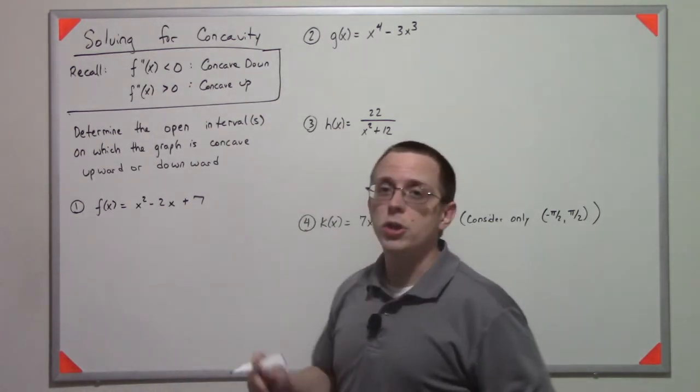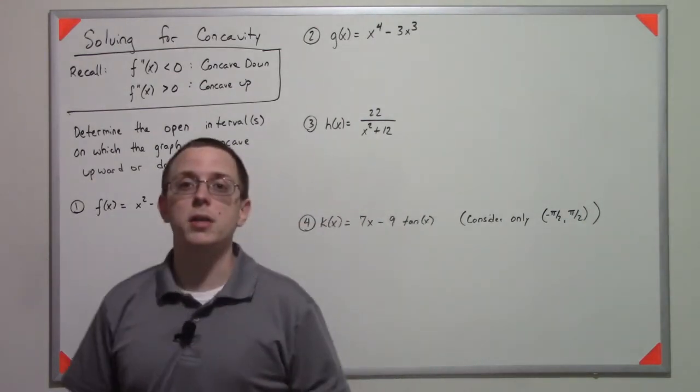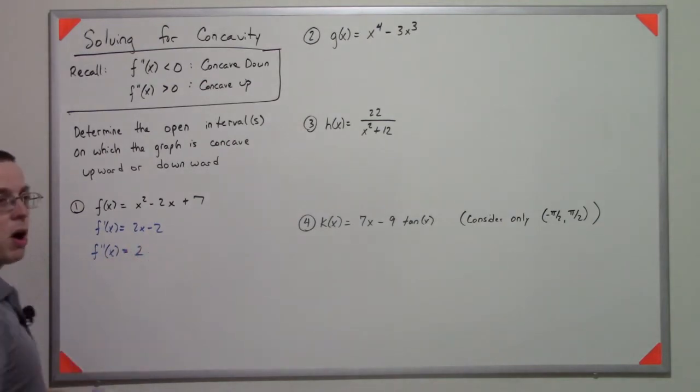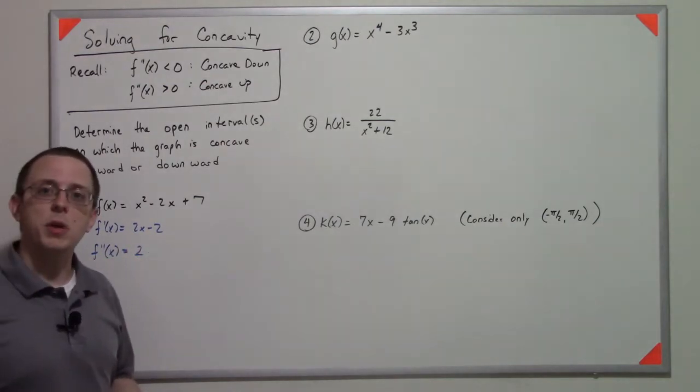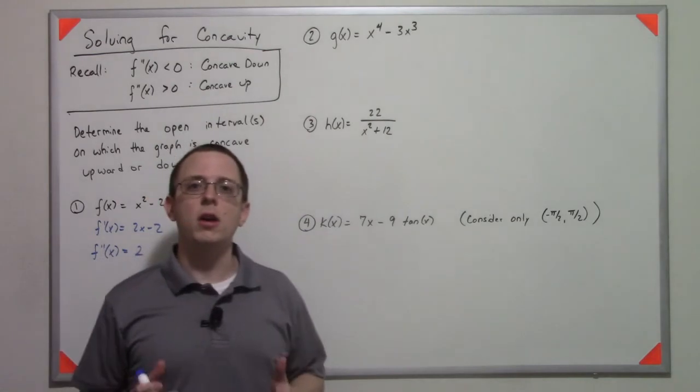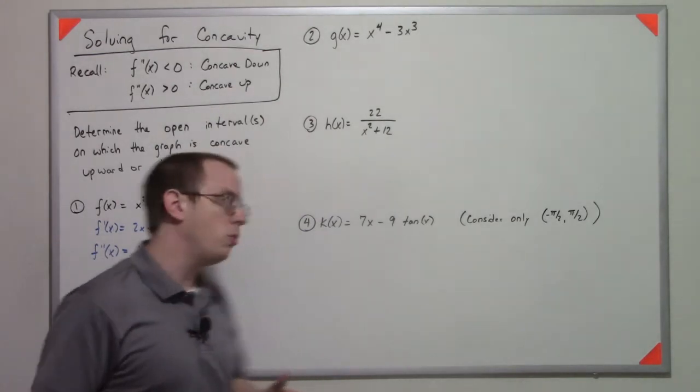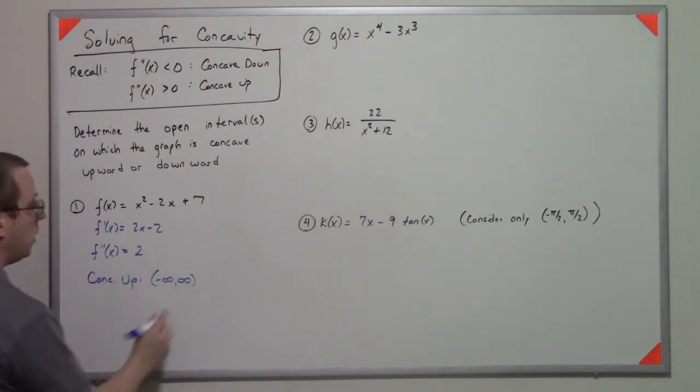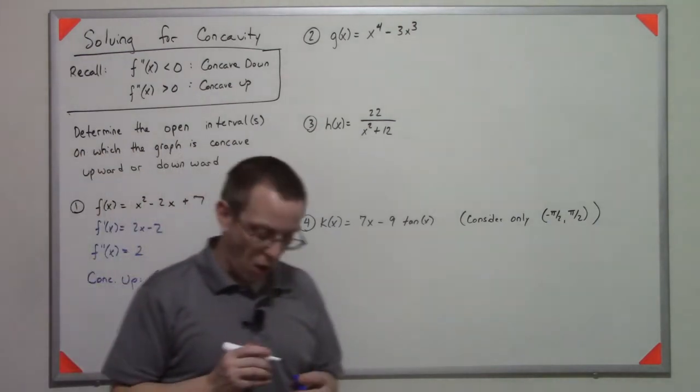Our first function is x squared minus 2x plus 7. If we take its first derivative, we get 2x minus 2. If we take its second derivative, we get positive 2. What that tells me is that this function is concave up on its entire domain. So it's not concave down at all.